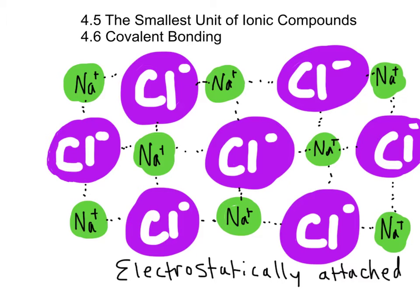Now we're going to cover the smallest unit of ionic compounds and the covalent bond, sections 4.5 and 4.6. What you see in front of you is a crystal lattice of sodium chloride. The dotted lines show how they're electrostatically attached. That means there's not really a bond there, but their opposite charges attract each other and hold the form, and so we get what's called a crystal lattice.